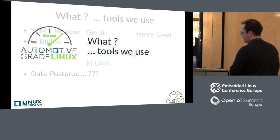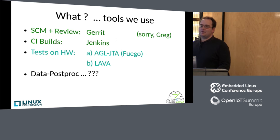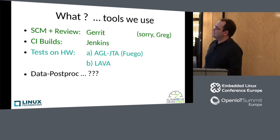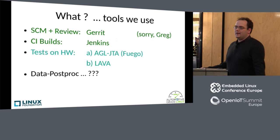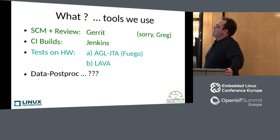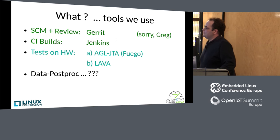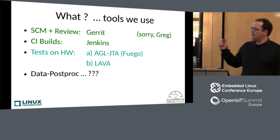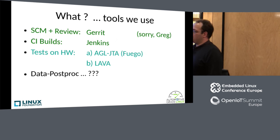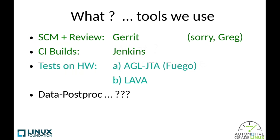What tools do we use? Pretty much a standard set. We picked Gerrit for CI builds. We use Jenkins — there are other systems like GoCD, pick your weapon. For tests on hardware, right now we use two systems, and I'll tell you which part of the game each is used for. One is AGL JTA, which is basically Fuego, and Lava. The big work-in-progress target is how we post-process all the data we gather — that's in most cases still a question mark or being worked on.